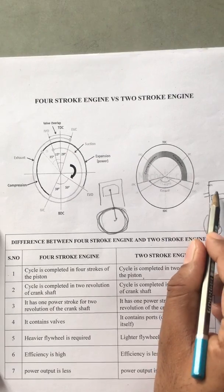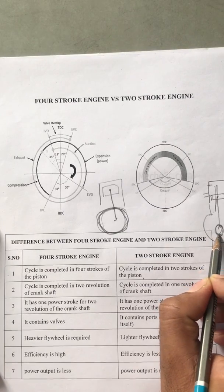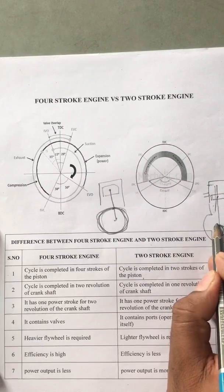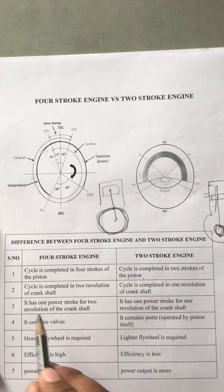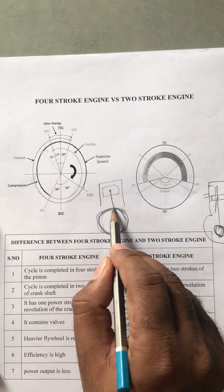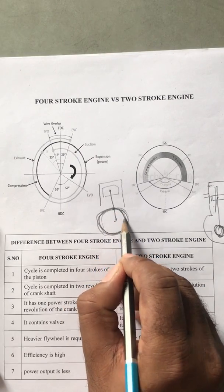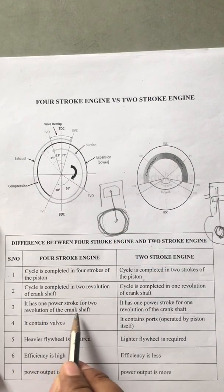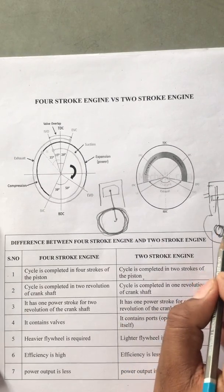TDC to BDC is one stroke and BDC to TDC is one more stroke, so that is only one revolution — piston moving from top to bottom and bottom to top. That means one revolution equals one cycle. The 4-stroke engine has one power stroke for every two revolutions of the crankshaft: suction and compression in the first revolution, expansion and exhaust in the second revolution. The 2-stroke engine has one power stroke per revolution of the crankshaft.